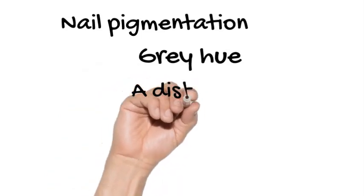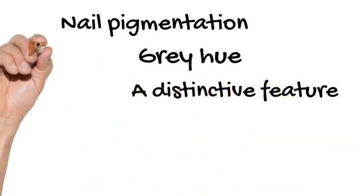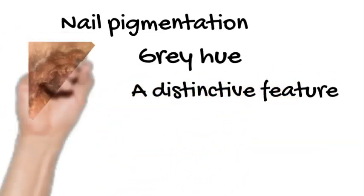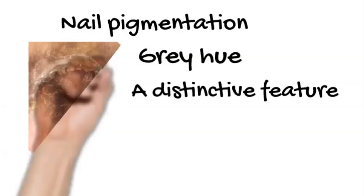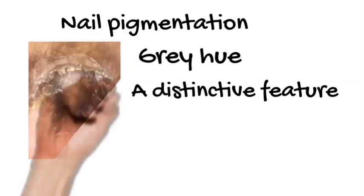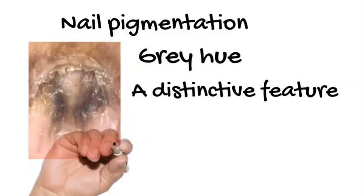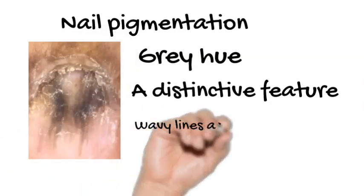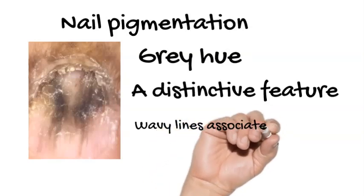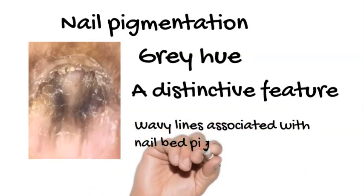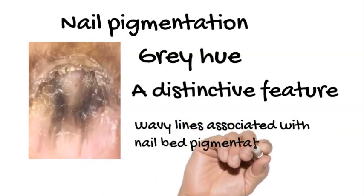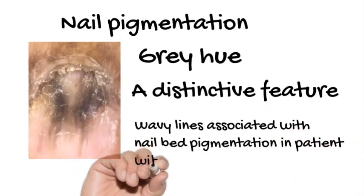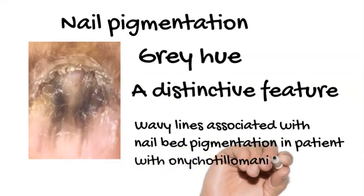Regarding nail bed pigmentation: it appears as a gray hue, and this is a distinctive feature of onychotillomania. In this photo, there are wavy lines associated with nail bed pigmentation in a patient with onychotillomania.